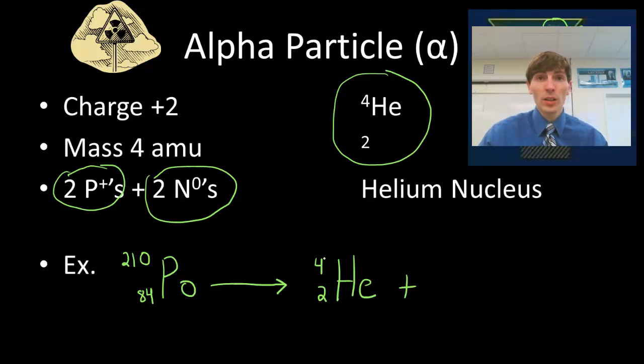So I lose four atomic mass units, four AMU. That leaves me with 206 left over. And I lose two protons, I had 84, and now I have 82. The thing is, 82 protons is no longer polonium. It's a different element. So what actually happens is the identity of my element changes when I lose some of my nucleus, and it becomes an atom of lead.